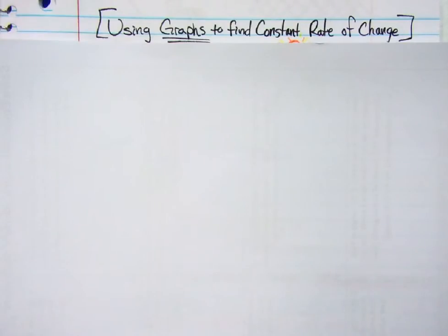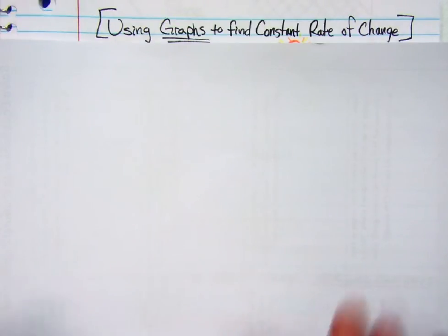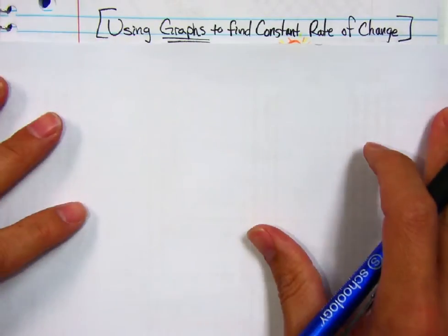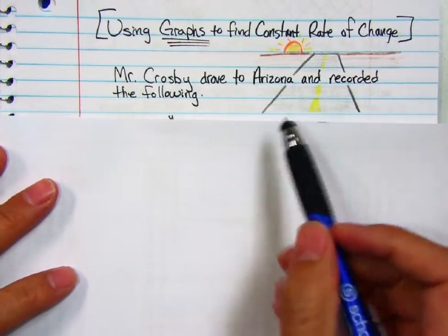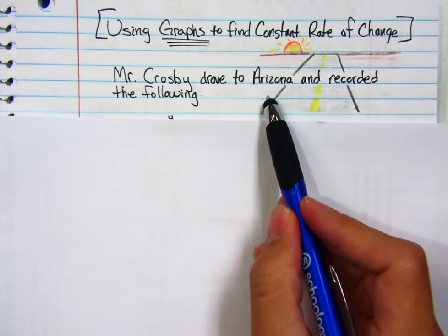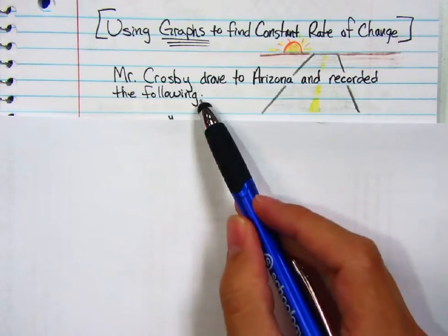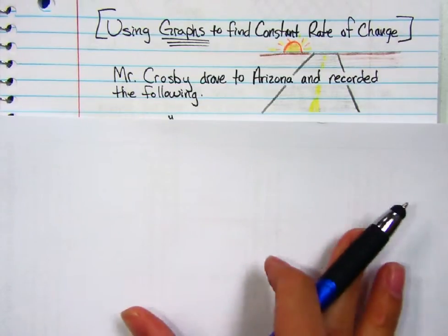Here's another example using graphs to find constant rates of change. Sometimes you're going to be given a t-chart, sometimes a graph, or both. So let's take a look at this. Mr. Crosby drove to Arizona and recorded the following information.